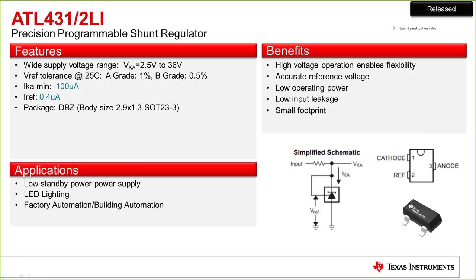The ATL431 Li is similar to the previous device, except it has a lower minimum cathode current of 100 µA versus the 1 mA shown on the previous slide. That's the minimum current to keep the shunt reference regulated, and this will also yield system-level benefits.